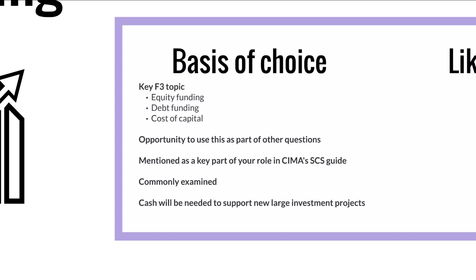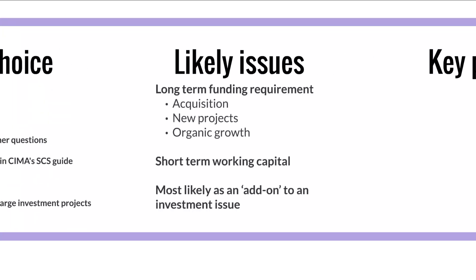From the pre-seen, cash will likely be needed to support new large investment projects. Hot Air only had 38 million Nordland dollars in the bank, and a lot of that will be needed for working capital. Likely issues could include short-term working capital requirements — overdrafts to pay bills, given the very high trade payables versus cash — or longer-term funding for organic growth, expansion into new countries, new projects, producing a new product, or indeed an acquisition such as a competitor, vertical integration, supply chain company, or even a solar panel producing company. It's most likely to appear as an add-on topic to an investment or strategic option type issue.